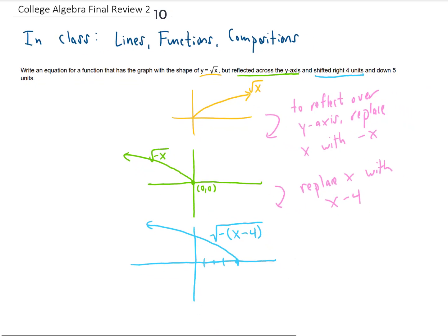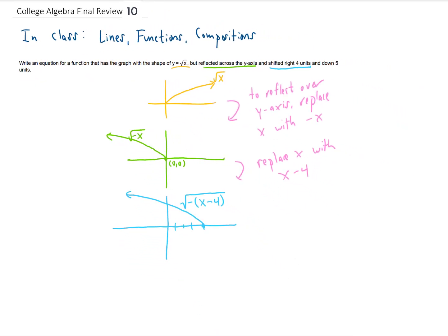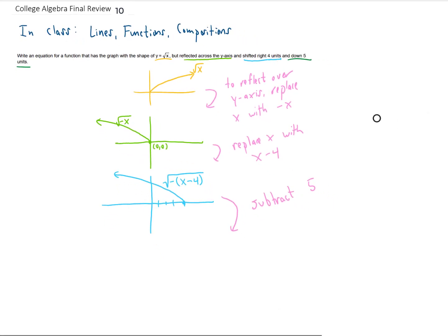Now I'm going to zoom out a little bit here so we can get all of this on one page. And finally, the last step we want is we want to shift this whole thing down 5 units. If we want to shift a function down 5 units, we just subtract 5. We can subtract that 5 right from the end of the function.